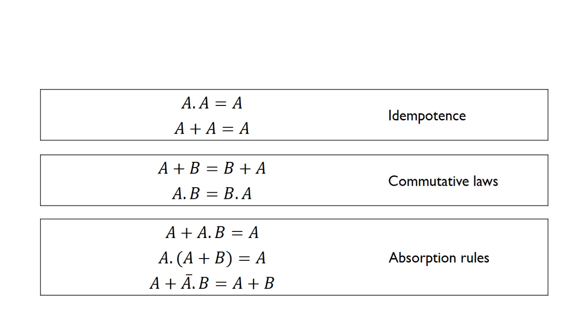So we've got the idempotence laws: A AND A is just A, and A OR A is A. Now the commutative laws essentially show that it doesn't really matter which order you define your inputs. A OR B is equal to B OR A, and A AND B is just equal to B AND A. This is just the same as in normal algebra, doing 3 times 5 is the same as 5 times 3, so the order of the operators doesn't matter.